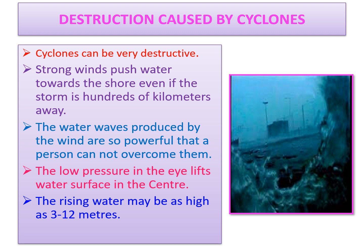It appears like a water wall moving towards the shore. As a result, the seawater enters the low lying coastal areas causing severe loss of life and property. It also reduces the fertility of the soil. These are the destructions caused by cyclones.